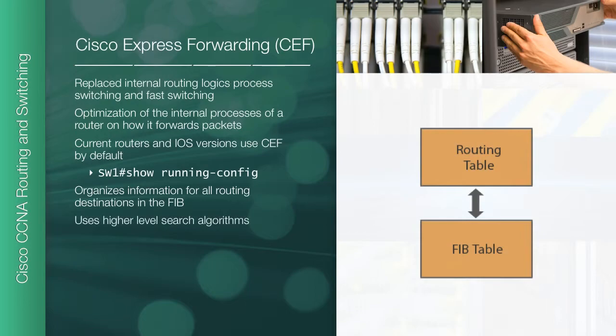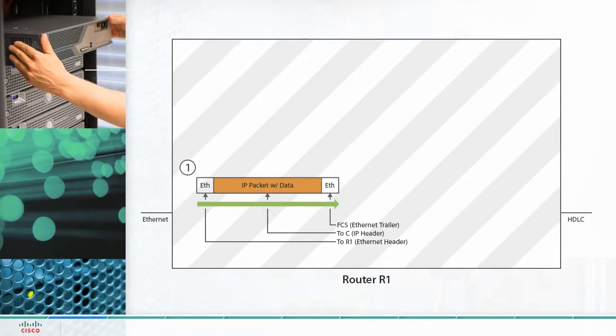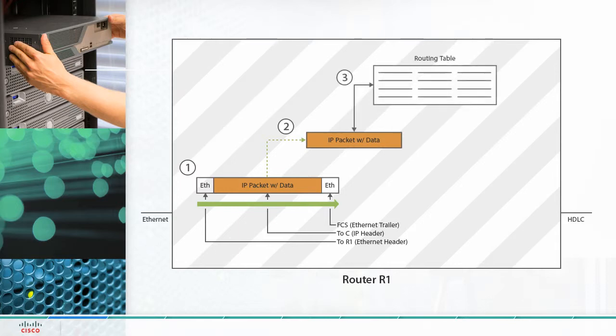Chapter one takes a look at Cisco Express Forwarding, or CEF packet forwarding, route summarization, and layer three route table lookup processes. This will provide you with the knowledge of exactly what the device is doing when it tries to route traffic from one network to another.